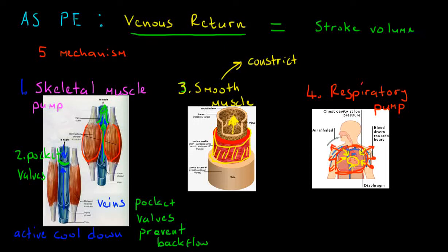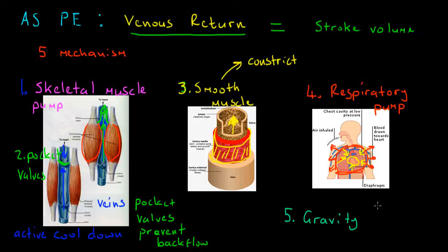The fifth and final mechanism is gravity. When blood is fired toward the head or arms — which are above the heart — gravity will help return that blood to the heart naturally. This doesn't work when blood is fired down to the legs during running, which is why during rest or warm-downs people will lie on their back and have their legs shaken or elevated, allowing gravity to pull blood back toward the heart.